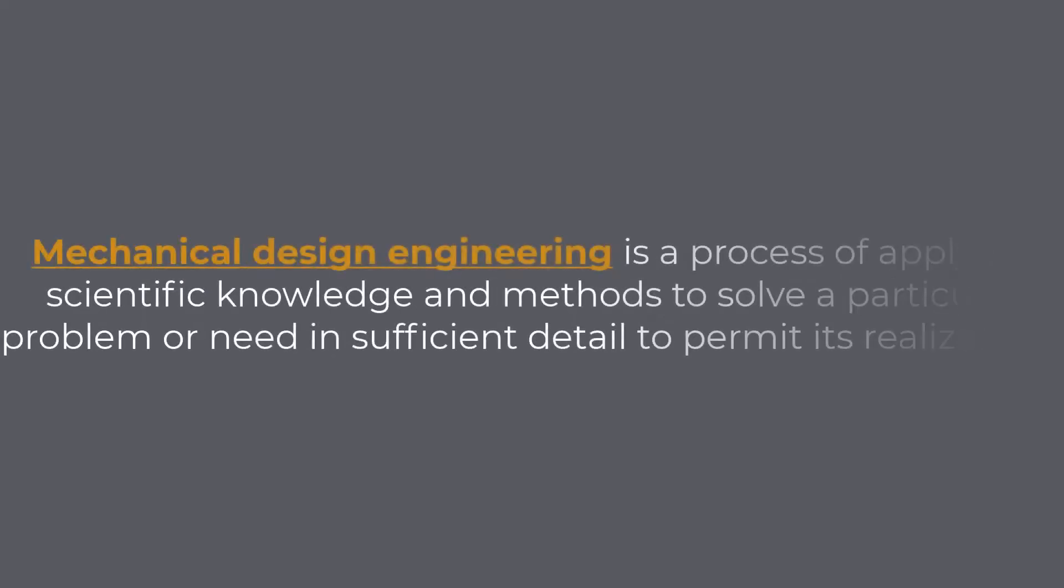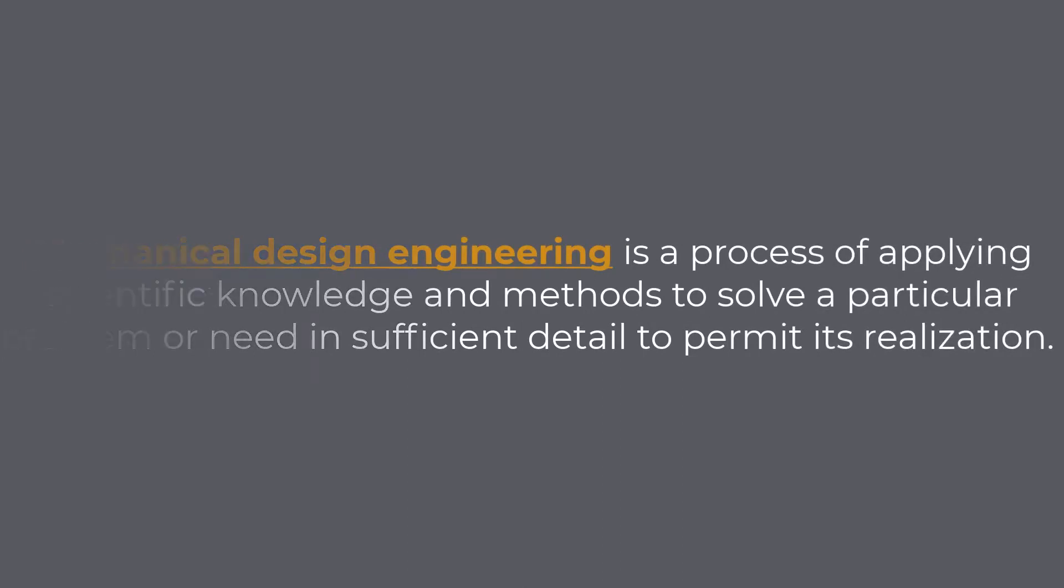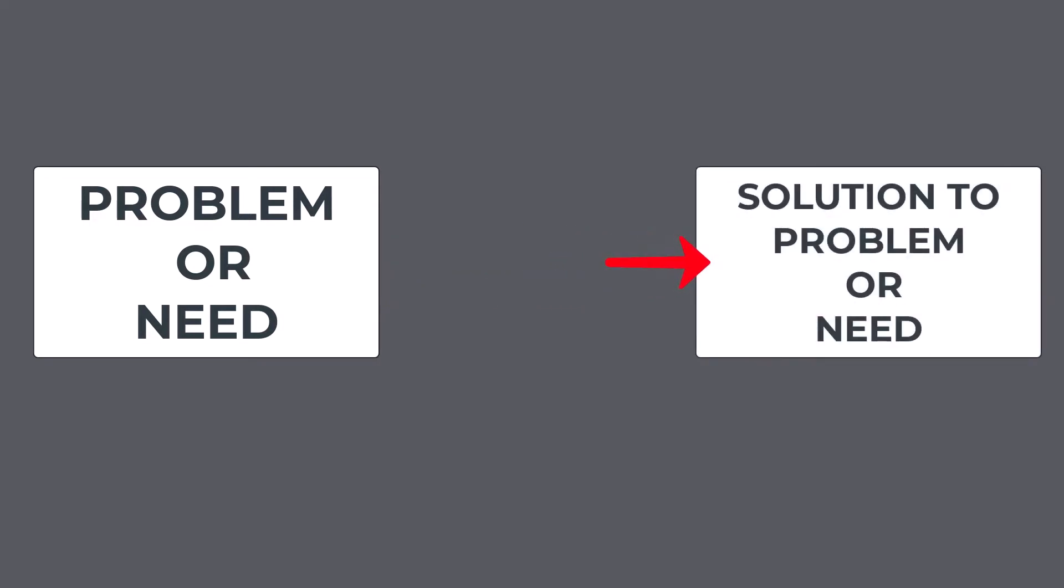Combining all this together, we can say that mechanical design engineering is a process of applying scientific knowledge and methods to solve a particular problem or need in sufficient detail to permit its realization. We mean by this that the design process starts when presented with a particular problem or need. We plan on how to solve this problem, we offer the solution, we define the steps on how to build it, and in the end, we have a physical solution to that particular problem or need in front of us.